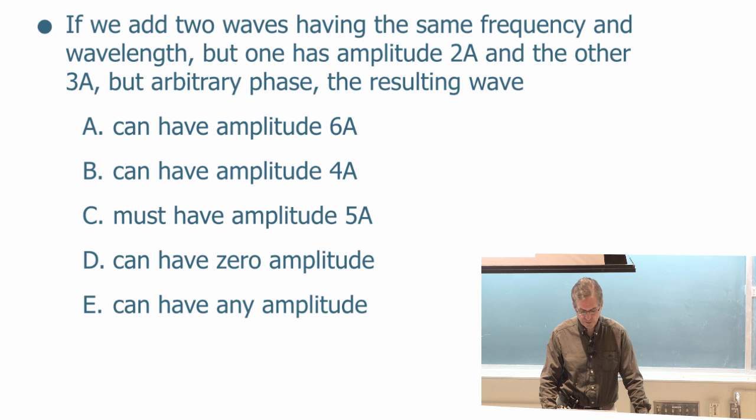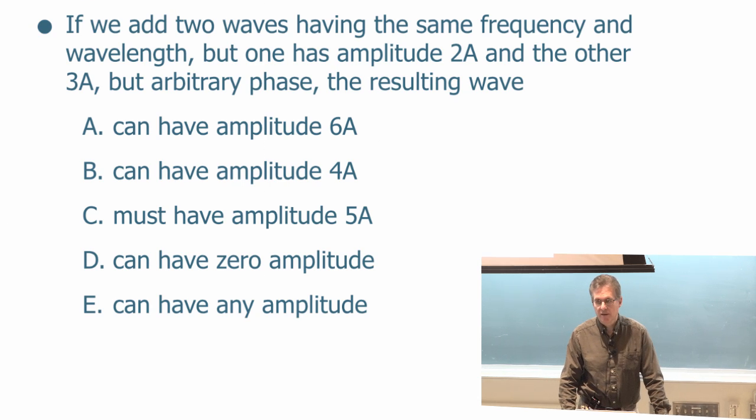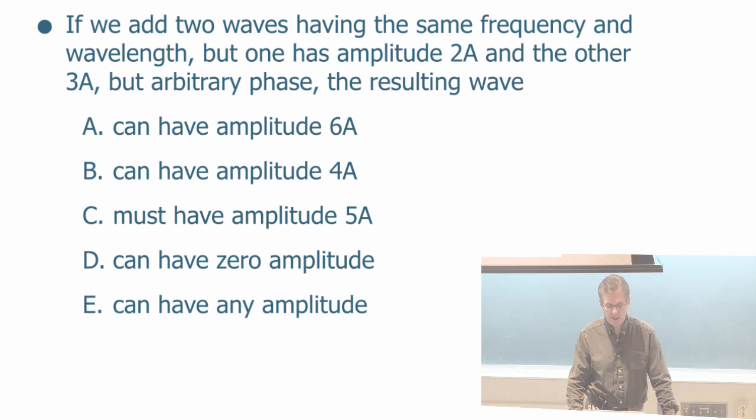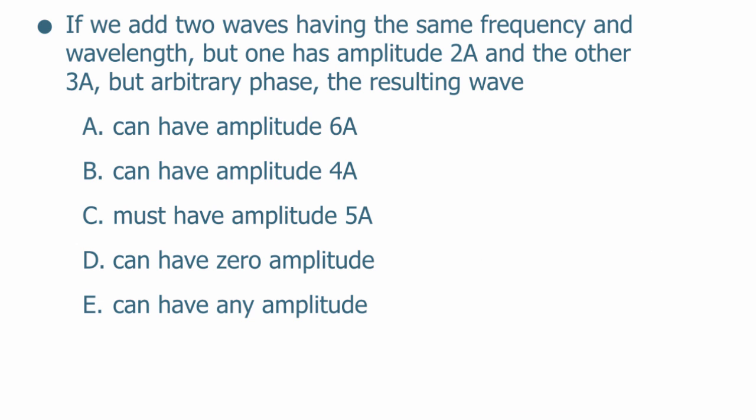So another clicker question. Let's see if we kind of have good intuition about how to add two waves. We add two waves having the same frequency and wavelength, but one has amplitude 2A and the other has 3A, but some arbitrary phase, we can do whatever phase shift we want. The resulting wave when you add the two can have what? A: amplitude 6A, B: amplitude 4A, C: it has to have amplitude 5A, D: it can have zero amplitude, or E: it can have any amplitude. So please talk to each other about this.